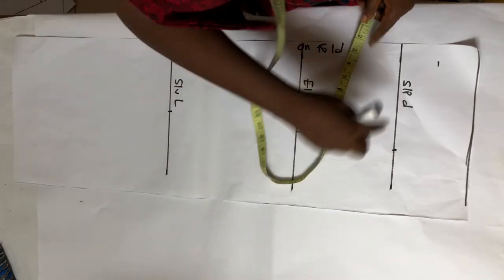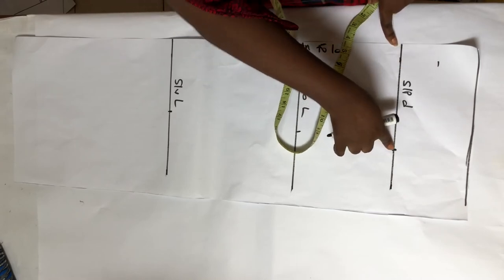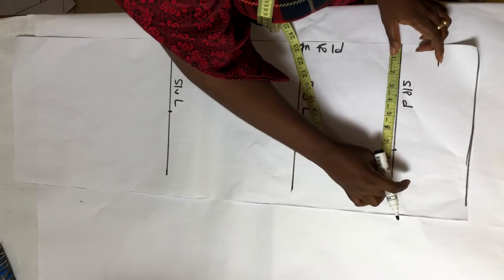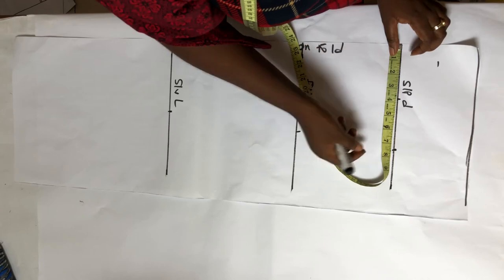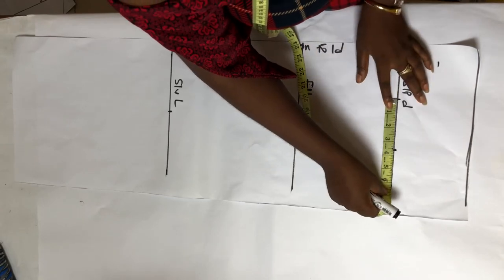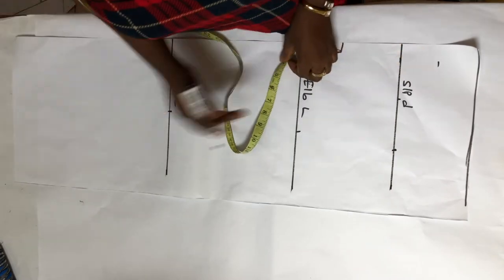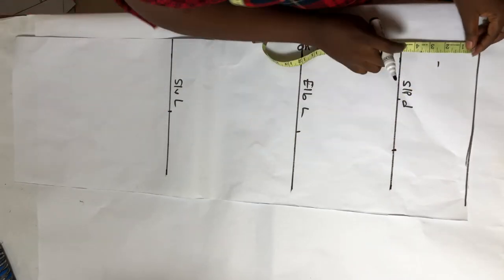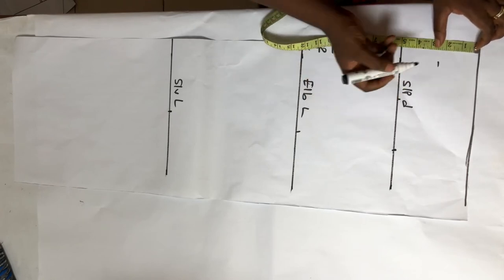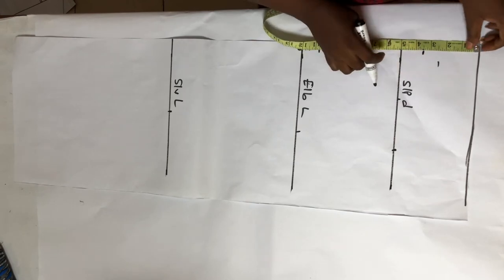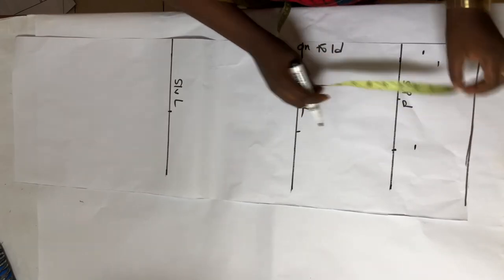I'm going to get the midpoint of what I marked here, 7.5. The midpoint is about 3.75. Then I'm going to get 3.5 here. I'll be getting the midpoint because this is the jacket sleeve.